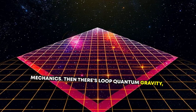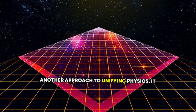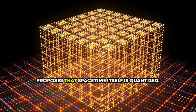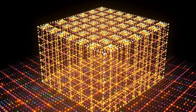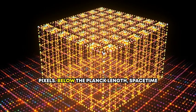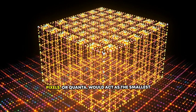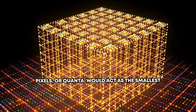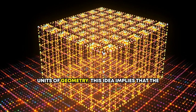Then there's loop quantum gravity, another approach to unifying physics. It proposes that spacetime itself is quantized, like a digital image composed of individual pixels. Below the Planck length, spacetime pixels, or quanta, would act as the smallest units of geometry.